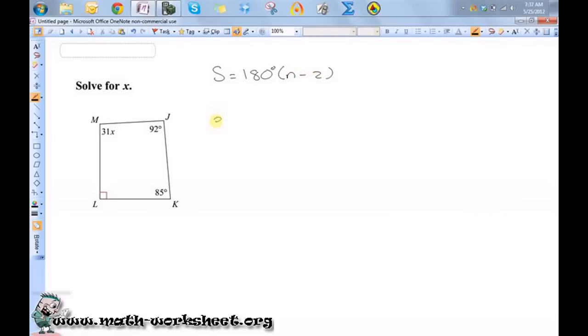Let me write the expression first. The measure of angle M plus the measure of angle J plus the measure of angle K plus the measure of angle L equals 360 degrees.